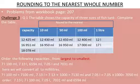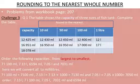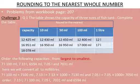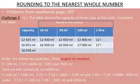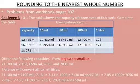The hundreds place is 4, so round down to 12,000 milliliter — that is 12 liters. If the hundreds digit were 5 or more, we would round to 13,000, which is 13 liters. Write the answer in liters, not milliliters.